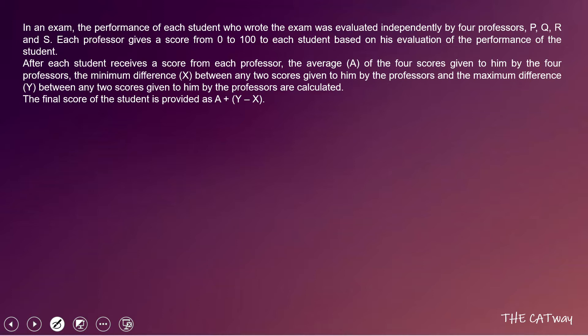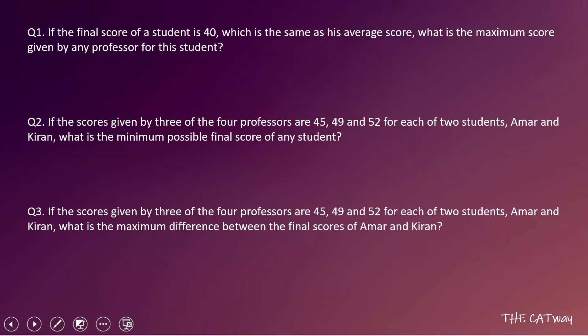The question says that in an exam, the performance of each student was evaluated independently by four professors P, Q, R, and S. Each professor gives a score from 0 to 100 to each student. After each student receives scores, the average A of the four scores, the minimum difference X between any two scores, and the maximum difference Y between any two scores are calculated. The final score of the student is A plus Y minus X.